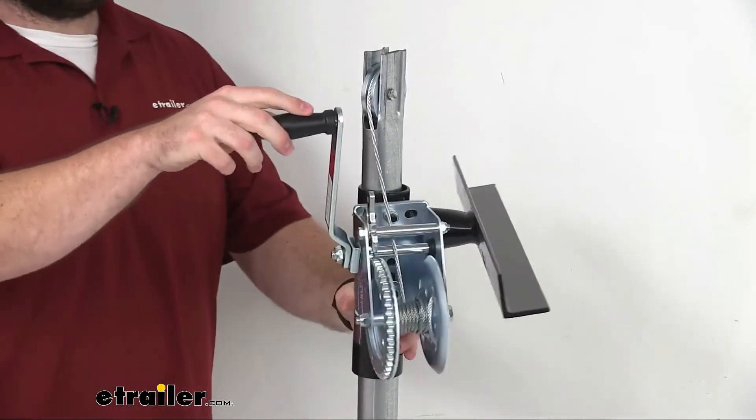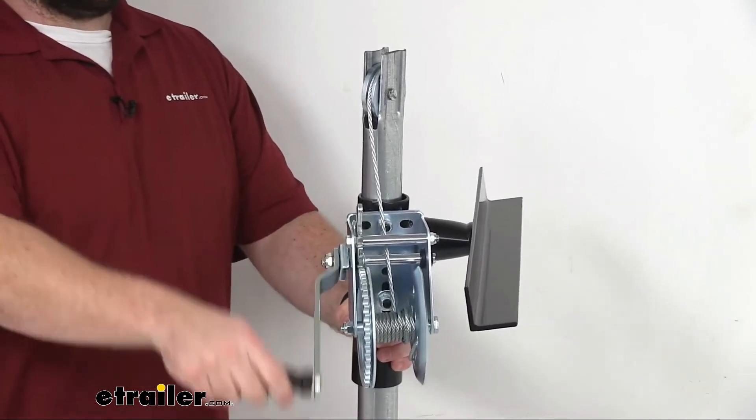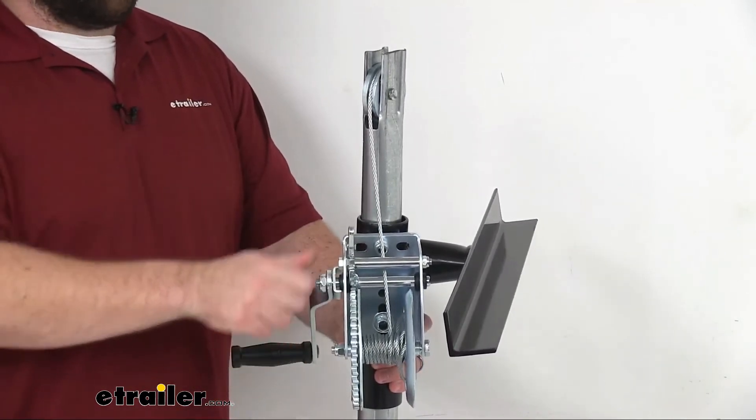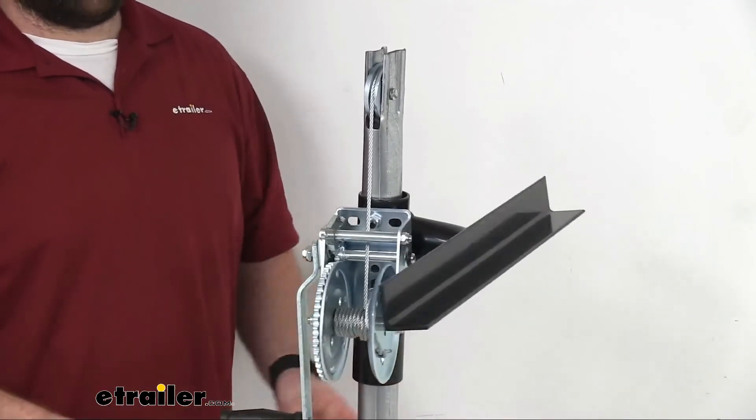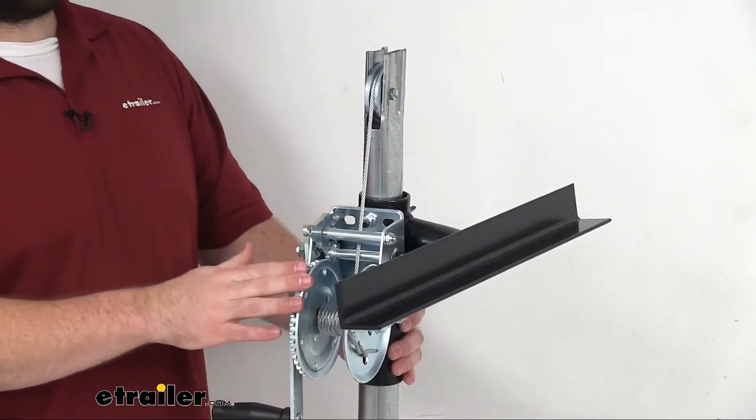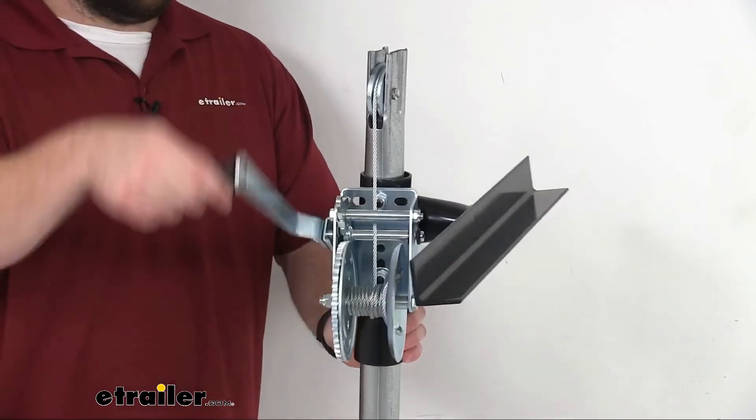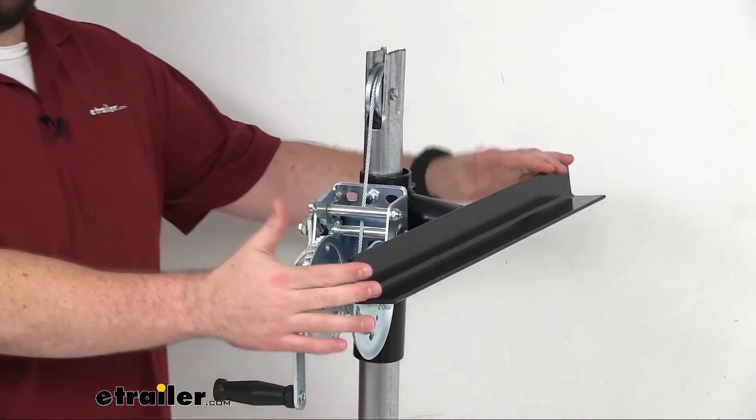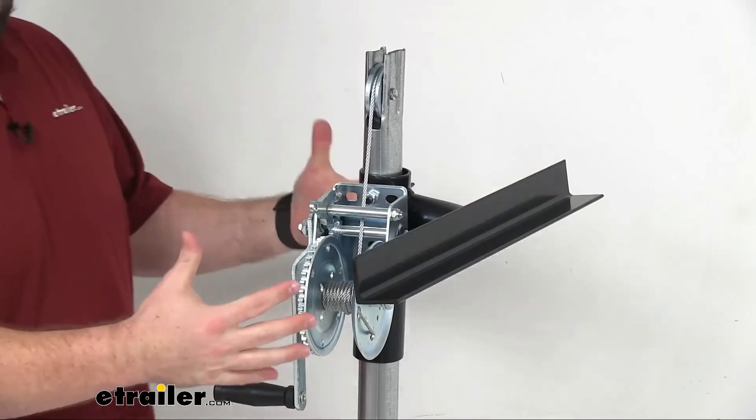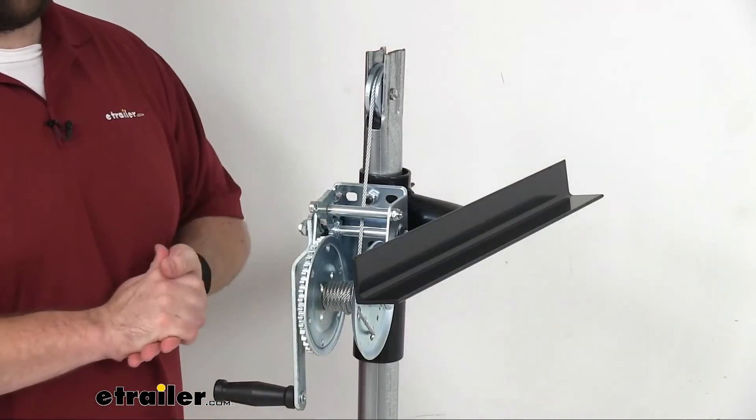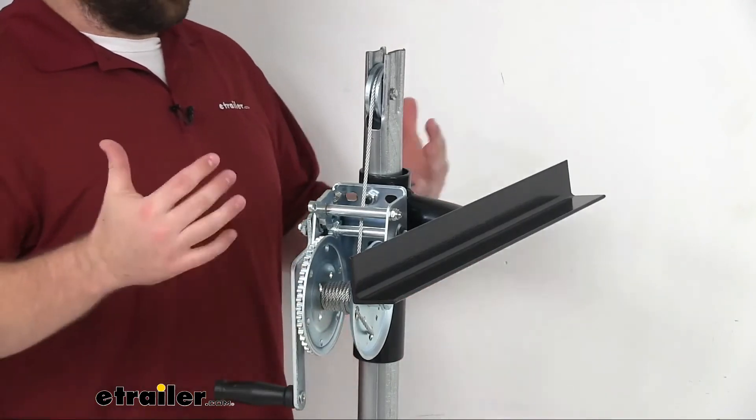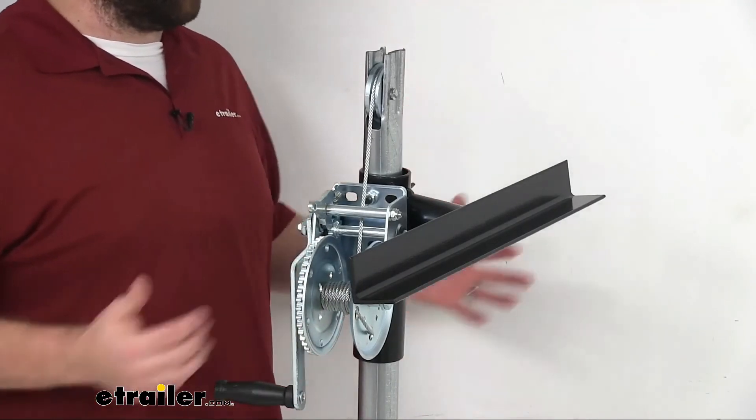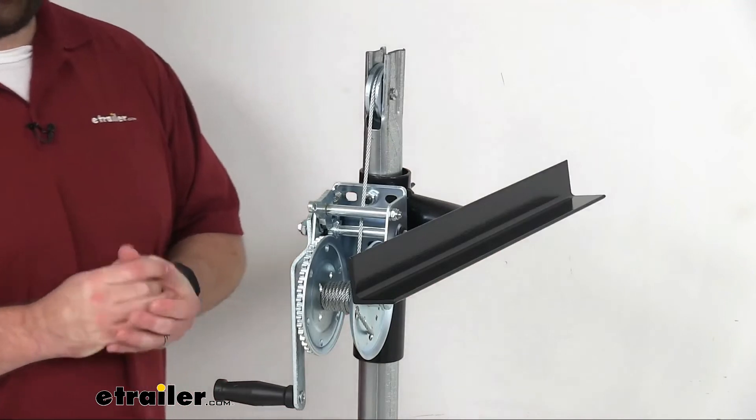Then the hand winch here is going to allow you to easily lower or raise the jack. It's got a gear ratio of three to one so it's pretty quick. Of course I don't have any weight on here, but this is going to very easily allow you to raise and lower your camper. Once you have it off your truck, you can lower it down, lift it back up when you're ready to get your truck back under it.